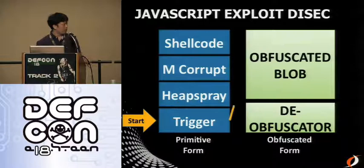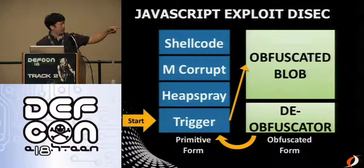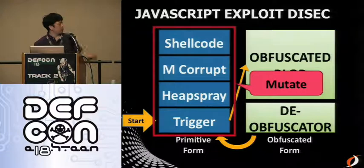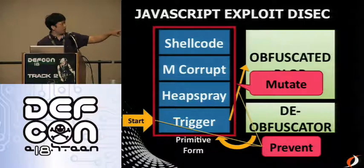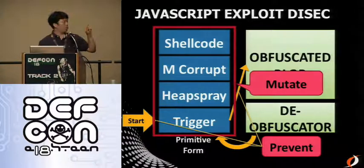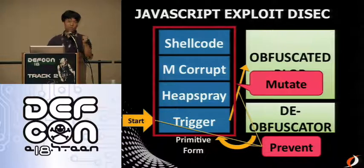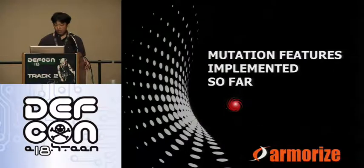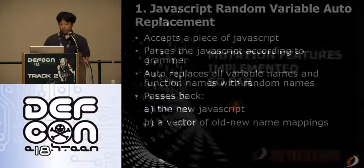The trigger causes the de-obfuscator to de-obfuscate the blob, then executes the heap spray and memory corruption. We want to mutate the entire primitive or raw form. For the triggering part, we want to prevent execution if we detect we're inside a sandboxed or detection environment.